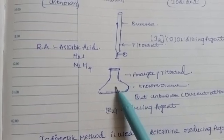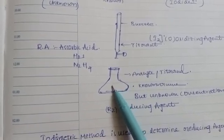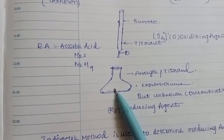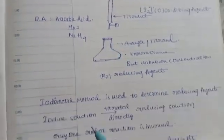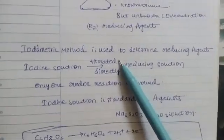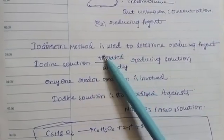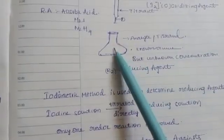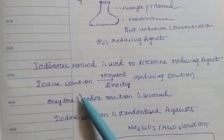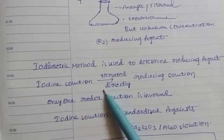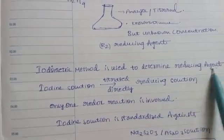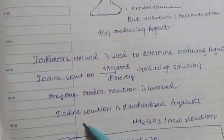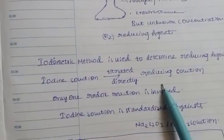Examples of reducing agents include H2S and N2H4. This oxidizing agent is added step by step, and the indicator (starch) is used to observe the color change. The reducing agent is in the unknown solution. The unknown solution is known to contain a reducing agent, and we perform the titration.